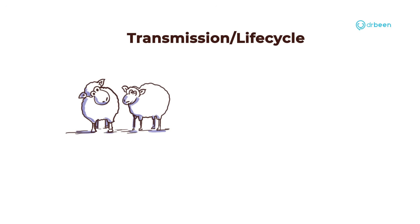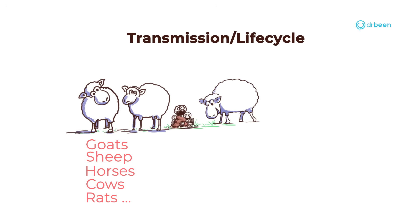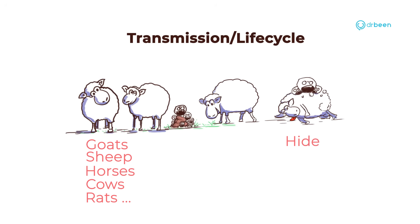Let's go over the transmission and the life cycle. This pathogen is usually found on animals and animal products — goats, sheep, horses, cows, rats, and others. The pathogen in these animals transmits usually from the orofecal route. Spores are shed in the feces of these animals. Animals that have died while carrying the disease can have lingering anthrax spores. Animal hide, wool, and hair can also have the pathogen on them.